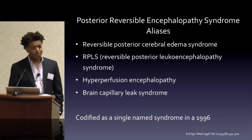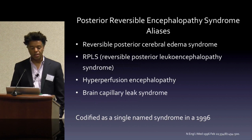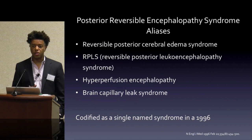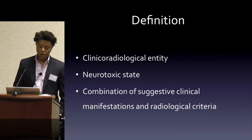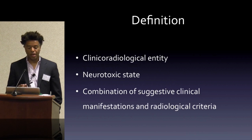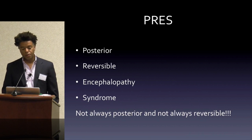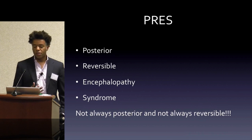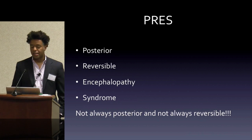To define PRES — it actually has a pretty terrible name. Posterior Reversible Encephalopathy Syndrome. It's got a number of different aliases: hyperperfusion encephalopathy, and my favorite, brain capillary leak syndrome. It was codified as a syndrome from a small case series in 1996, from about 12 to 15 patients. It's really a clinical radiological entity requiring a combination of suggested clinical manifestations and defining radiological criteria. The reason I said PRES was a terrible name is because it's not always posterior, and it's actually not always reversible.